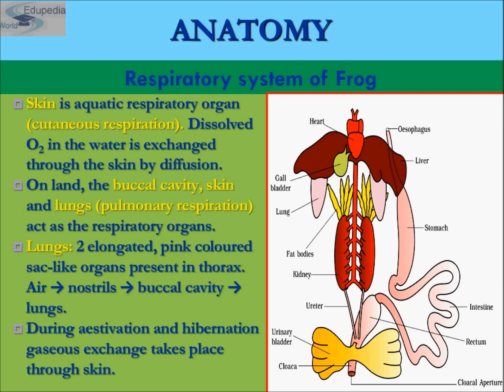There is a frog which we call the hairy frog. Its scientific name is Trichobatracus robustus. It has small lungs, and during breeding season, the males get hair-like projections on their back legs. This is because of the high oxygen need at that time.